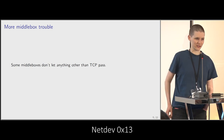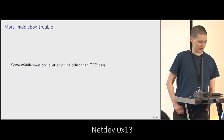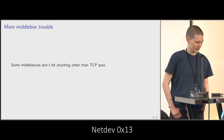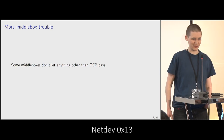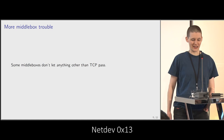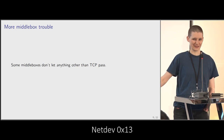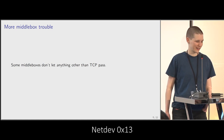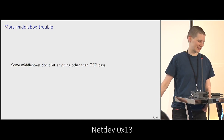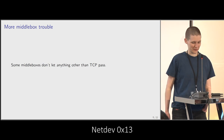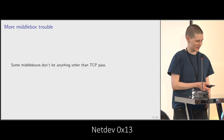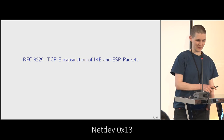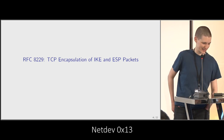But that's not the end of middlebox trouble. Unfortunately, there are middleboxes that don't want anything other than TCP. I'm not saying it's a good thing and that we should indulge them, but it's a reality. So there comes TCP encapsulation for IPsec.